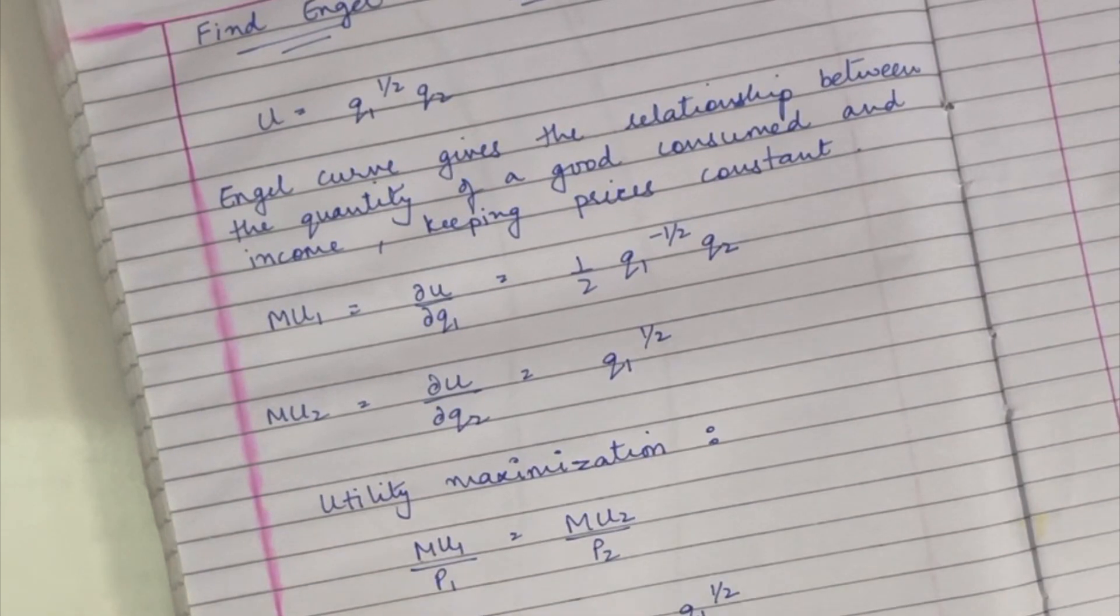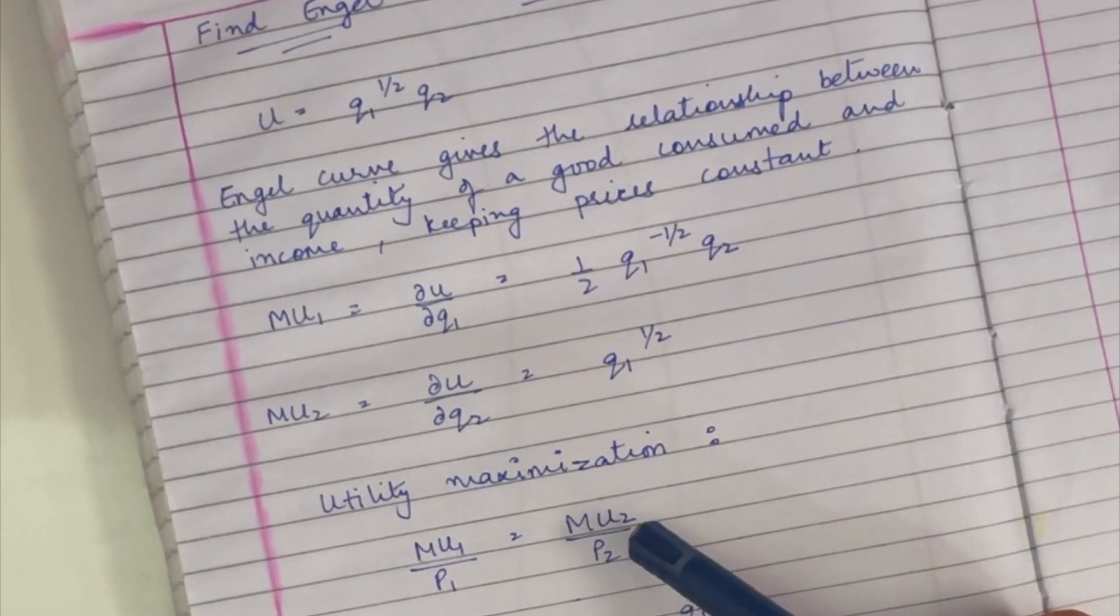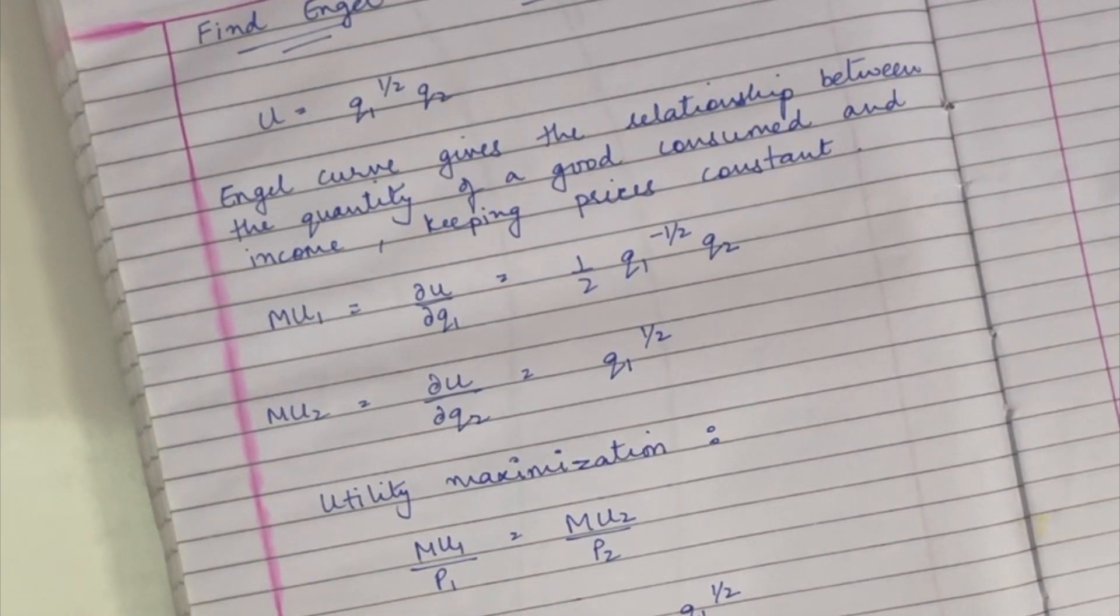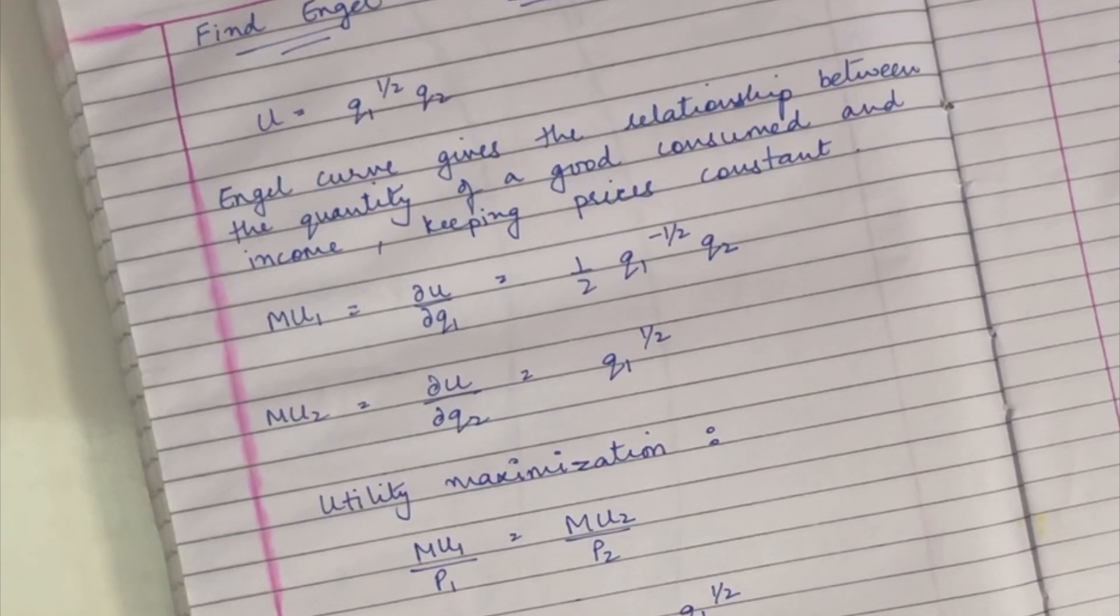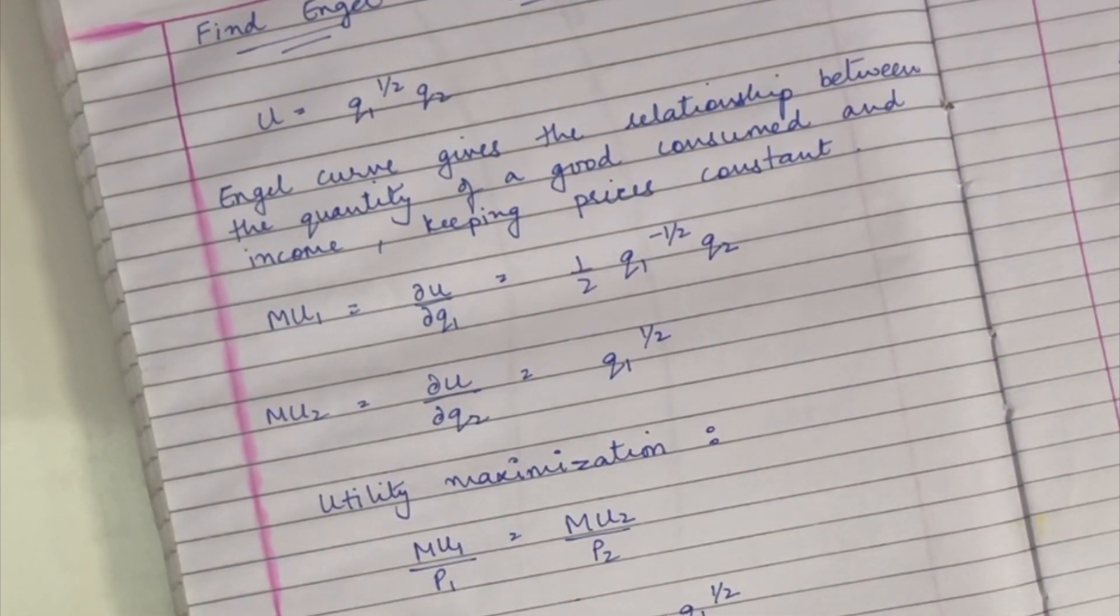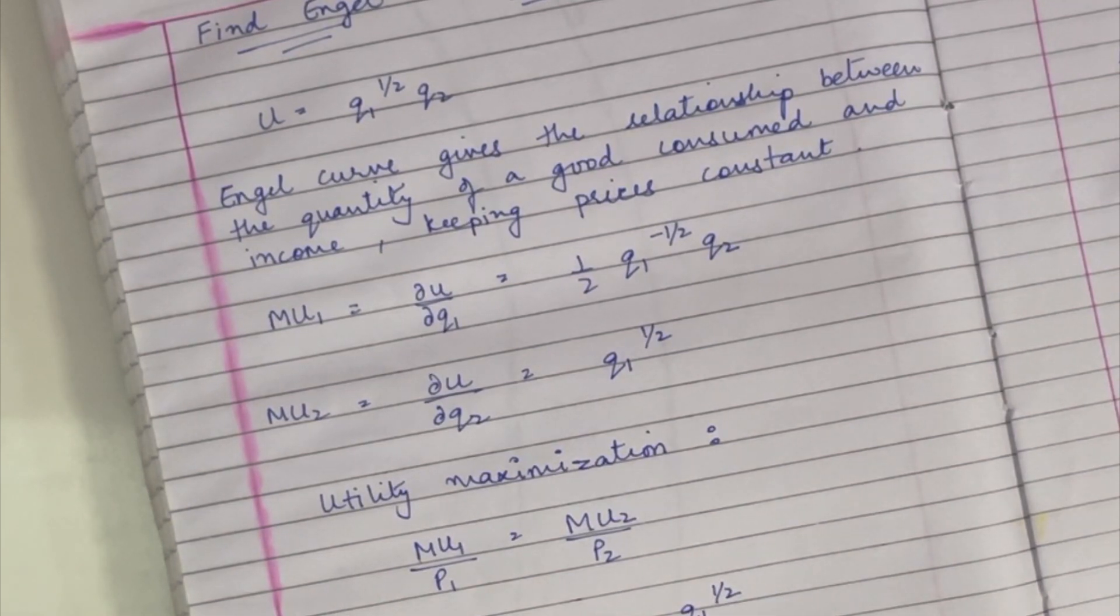So just substituting the value of MU1 and MU2 in these equations, I get half q1 minus half q2 divided by p1 equals q1 half divided by p2. Cross multiplying both, we get p2 into this entire equation and p1 q1 half.